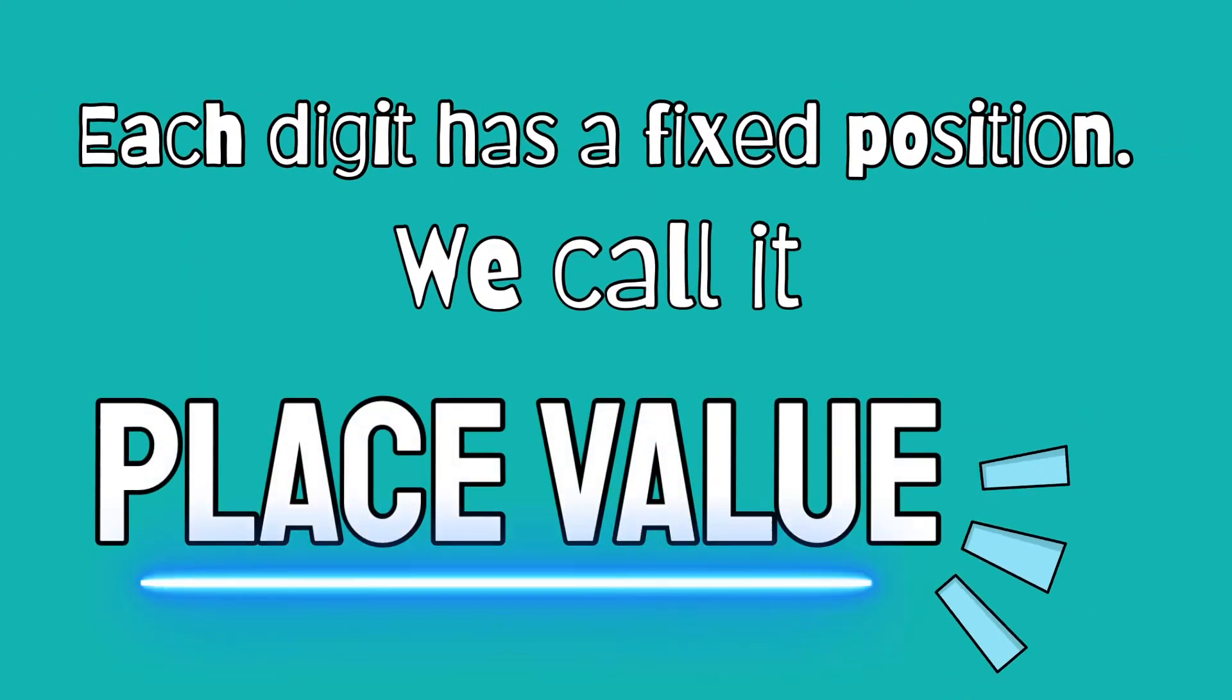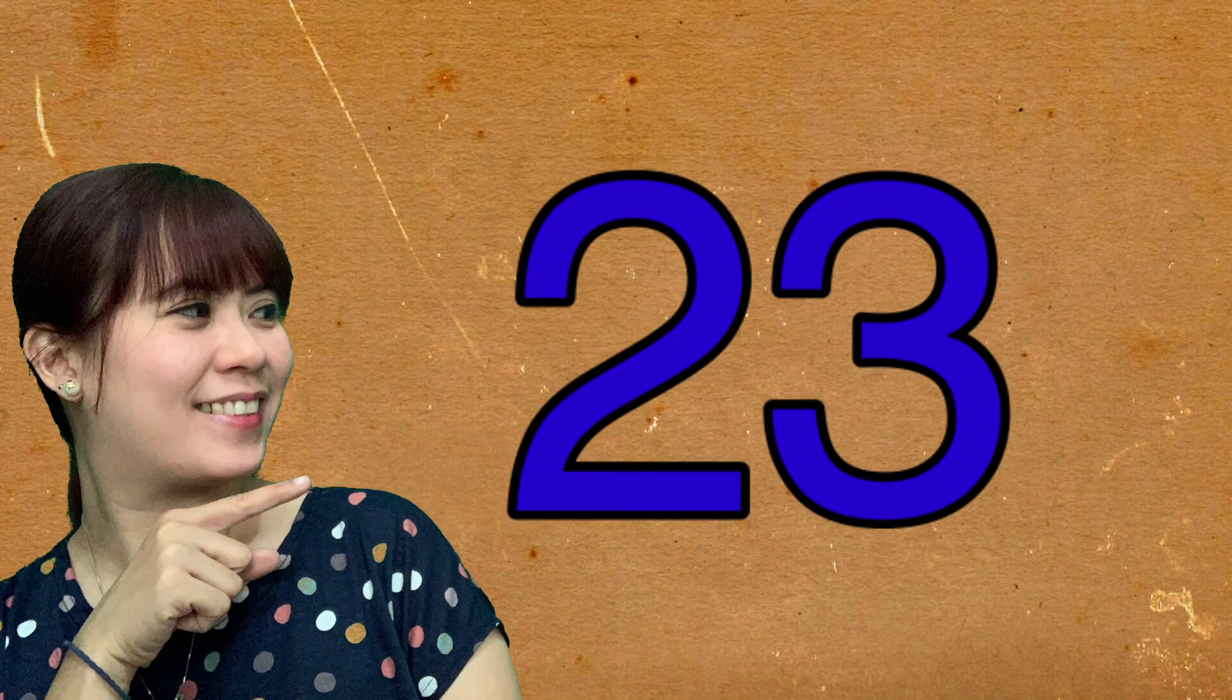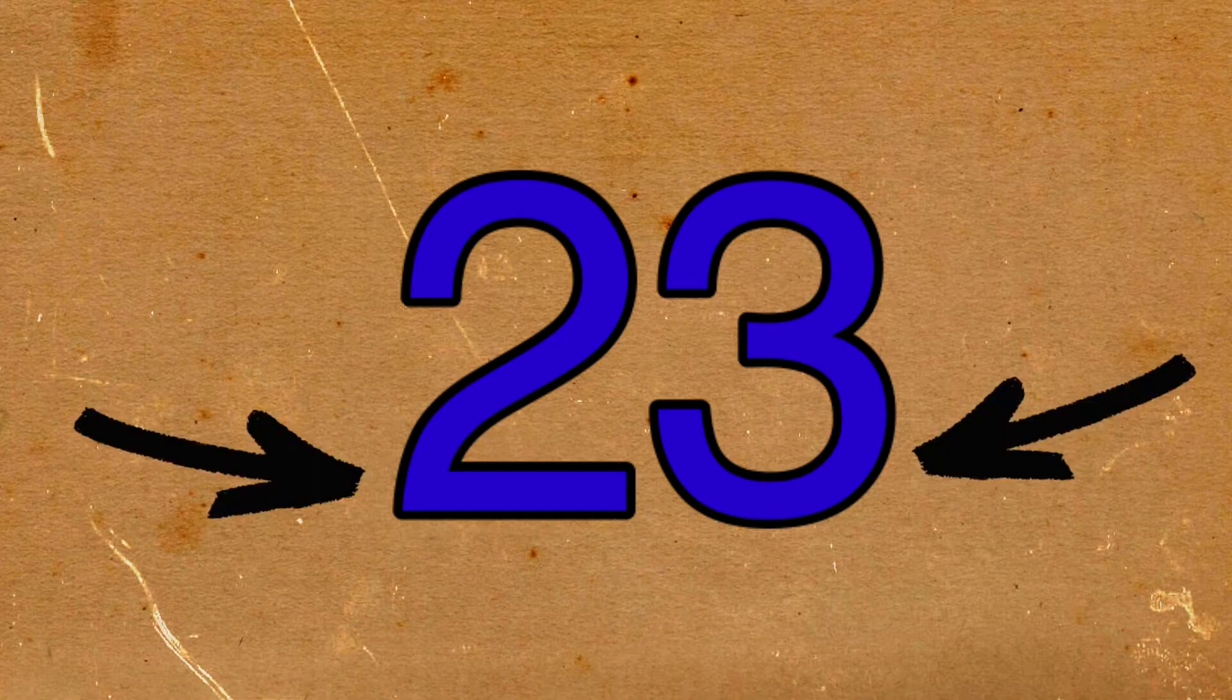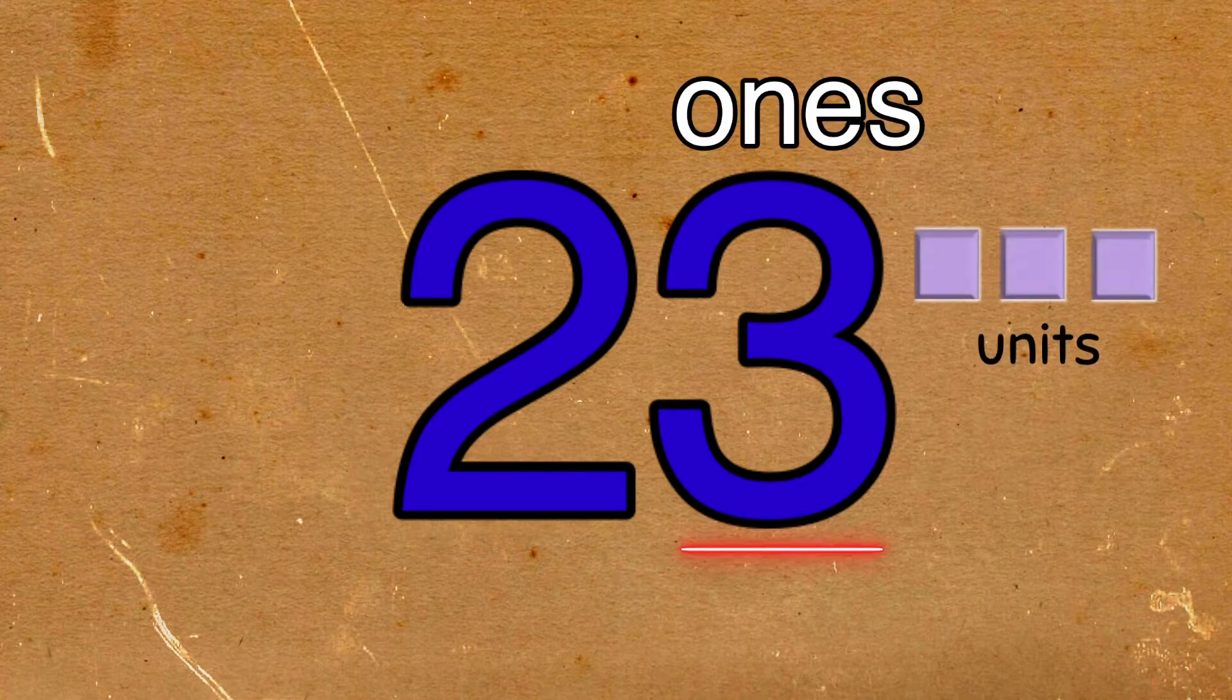Did you know that each digit has a fixed position? We call it place value. Let's look at this number, number 23. As I mentioned, each digit has a fixed position. For this example, number 3 is in the ones place. We can represent it by showing three units.